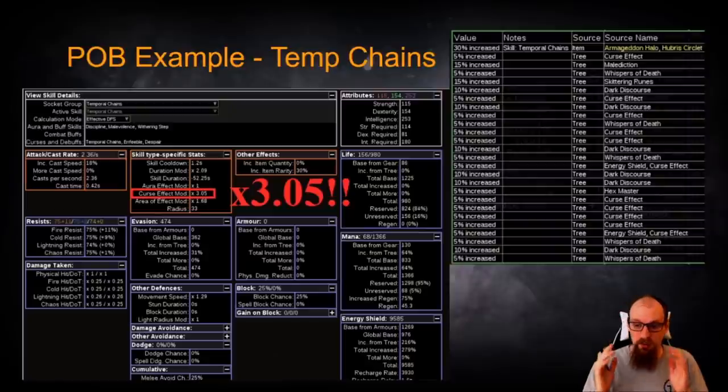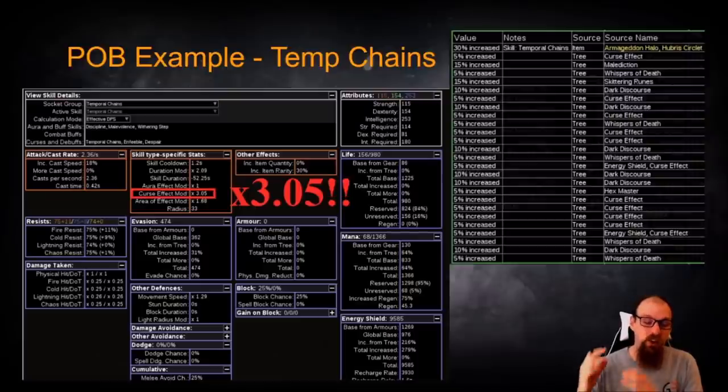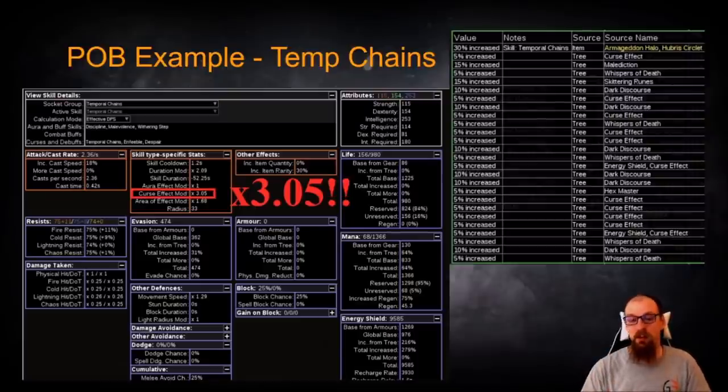you can see that we are going up by a whole additional 2.05 times on the Curse Effect mod for POB's calculation purposes. That is simply ridiculous. That's saying that just based on the Cluster Jewels that have become available during Delirium League, that curses and their Curse Effect power has more than doubled in its availability to what was previously available prior to Delirium Jewels being released.